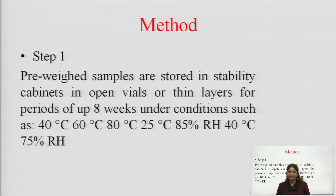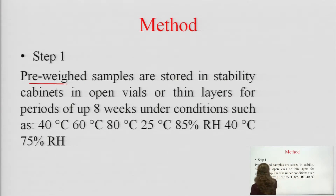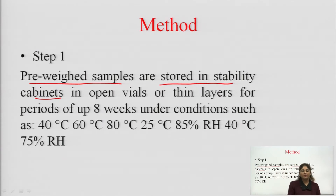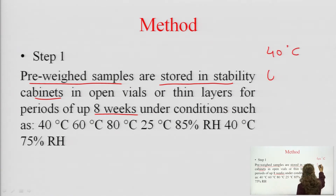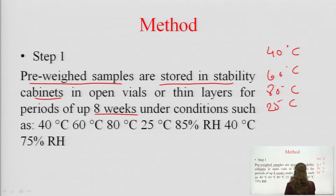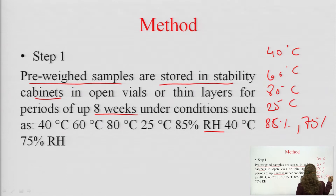The method by which we can determine chemical stability: first we pre-weigh the sample, then store it in stability cabinets or chambers. We place the drug in an open vial or thin-layer aluminum foil and keep it for up to 8 weeks in stability chambers under conditions such as 40°C, 60°C, 80°C, and 25°C at different relative humidity levels.